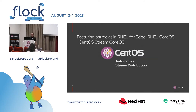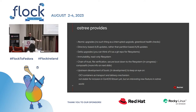Another difference from vanilla CentOS Stream is we use OSTree — OS3 — as our immutability solution. A bunch of Red Hat-based operating systems use this: RHEL for Edge, RHEL CoreOS, and CentOS Stream CoreOS, which was announced at the last CentOS Connect. OS3 gives you atomic upgrades — so if you get a power cut in the middle of an upgrade, there's no such thing as a partially applied upgrade.